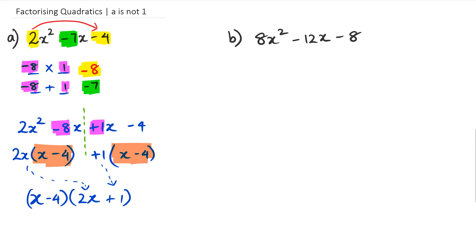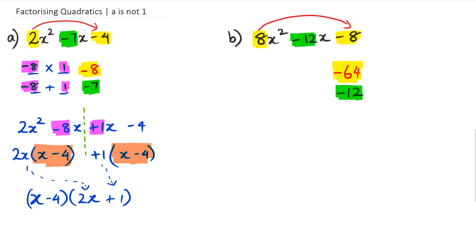So let's have a look at B. Before we start, we can see that we could make this problem a little bit simpler by taking out some common factors, but for this video I'm just going to go through it anyway. The first step is 8 times negative 8, which gives us negative 64. And I'm looking for two numbers that multiply to negative 64 and add up to negative 12. So we've got negative 64 from negative 8 multiplied by positive 8, and negative 12 is the coefficient of x.